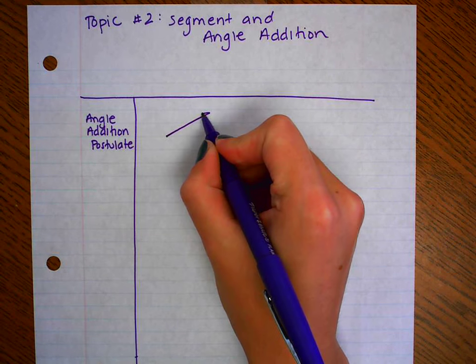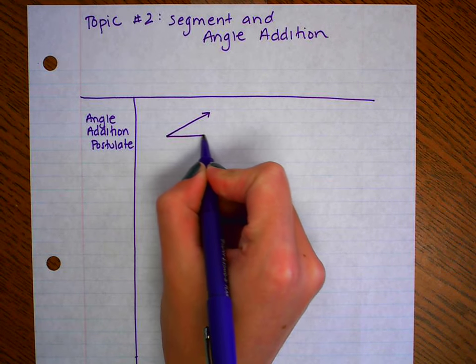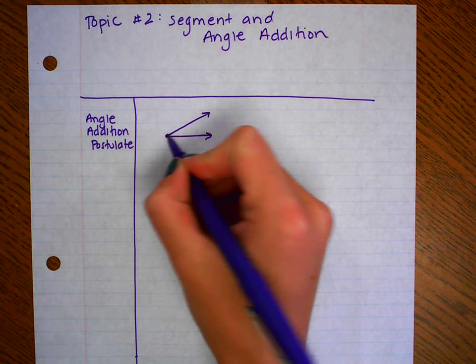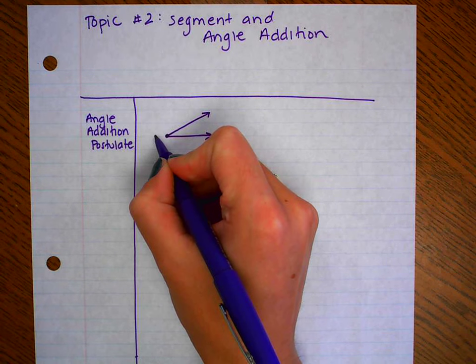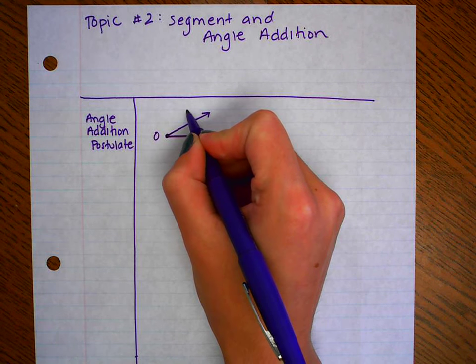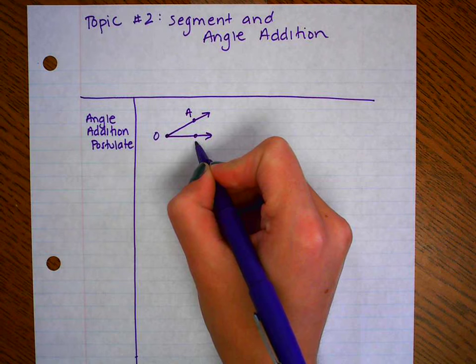So for instance, we've already talked about angles and how each angle has special angle measures. We've also talked about how to name angles, so I'm going to call this point O, we'll call this point A, and I'm going to call this point C.